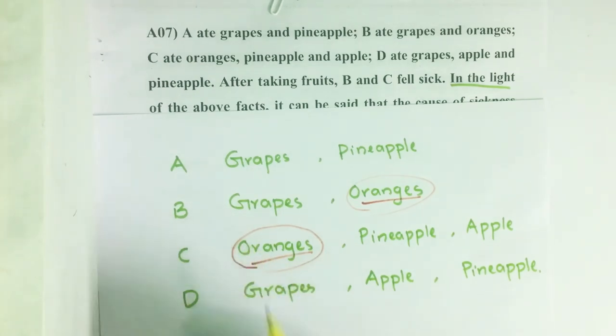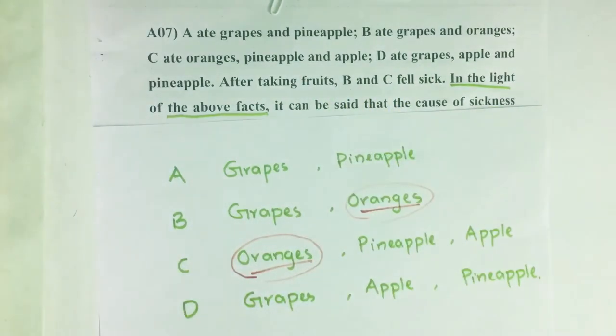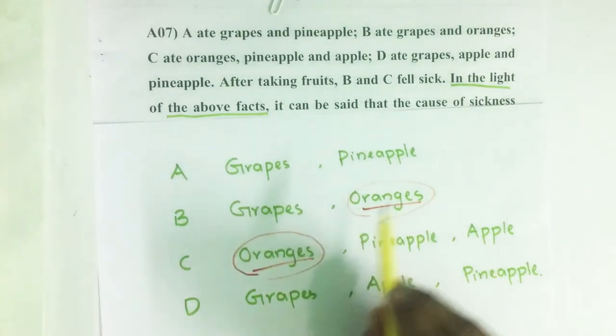So we just look for the common fruit which was eaten by B and C. That will be the reason for the sickness. And one more thing we have to take care of, that fruit is not eaten by anyone else.